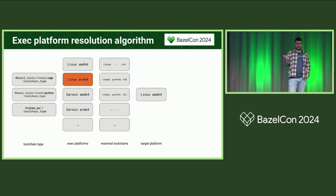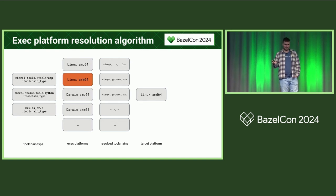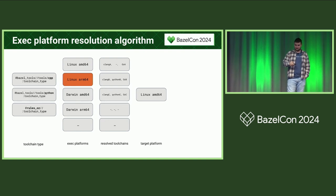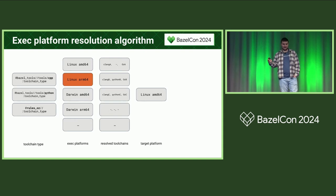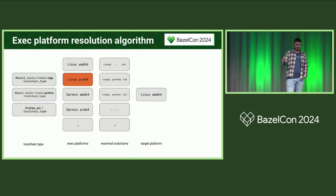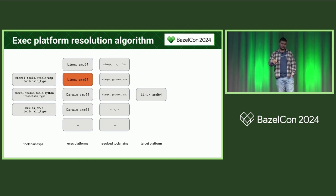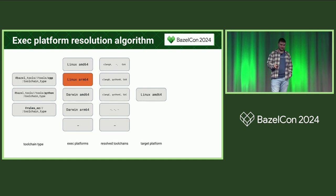That was only the first part. The second part may be a bit confusing. When you write a rule, you can actually use multiple toolchains at once — the same applies if you use execution groups. You take these multiple toolchain types along with the list of execution platforms, their resolved toolchains from the first step, and the target platform. It then goes over the execution platforms in registration order — order matters here too — and picks the first one that has all required toolchains and the highest number of optional toolchains.